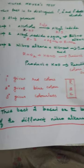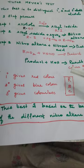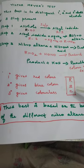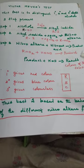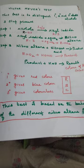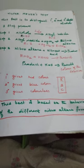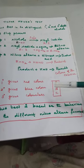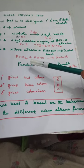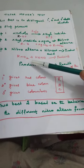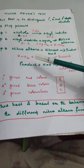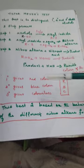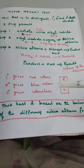You can remember the results using the mnemonic RBC: Red for primary, Blue for secondary, and Colorless for tertiary. This test is based on the behavior of different nitroalkanes formed from different types of alcohols, as the nitroalkane behaves differently depending on the type of alcohol. This is the basis of the Victor Meyer's Test.